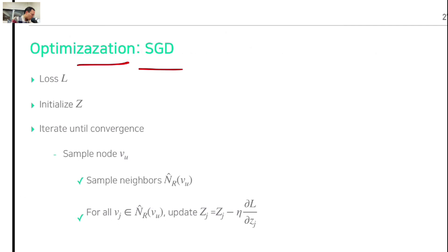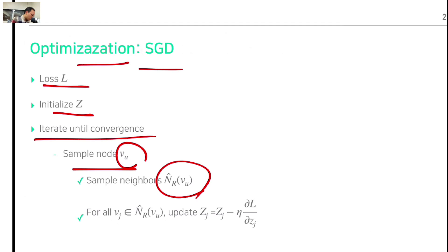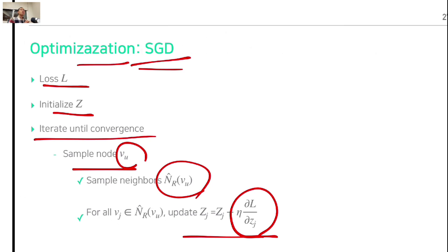Briefly, the optimization pseudocode works as follows: we have the loss, initialize z randomly, then iterate. We sample node v, get its neighbors, and apply stochastic gradient descent to update the vertex representations — the same as error back-propagation in neural networks.